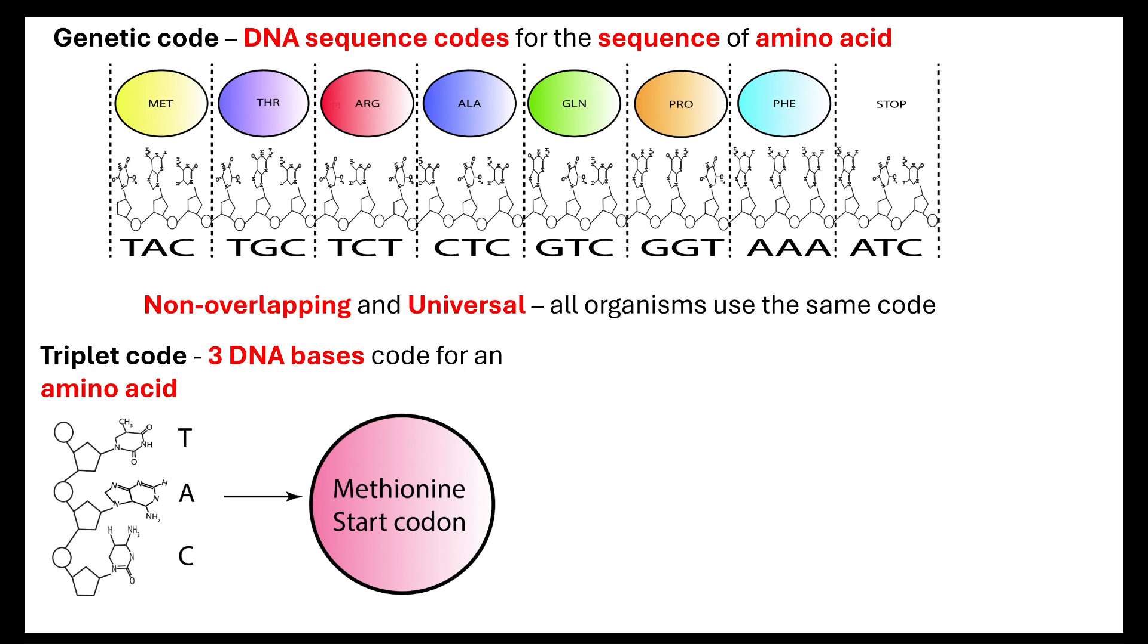The genetic code is non-overlapping. It is universal. So, non-overlapping means that the triplets do not overlap. It's always three bases, and it's universal, because it does not matter which organism we're talking about, whether it's prokaryotic, protoctista, animal, plant, fungi. They all use exactly the same code.